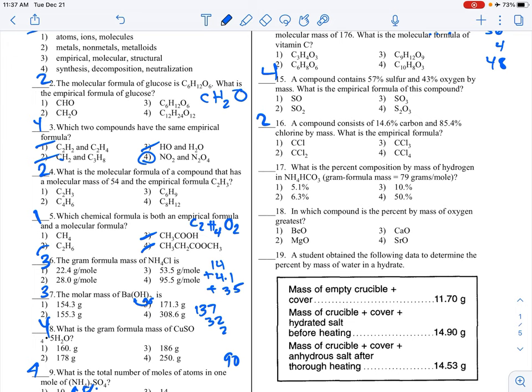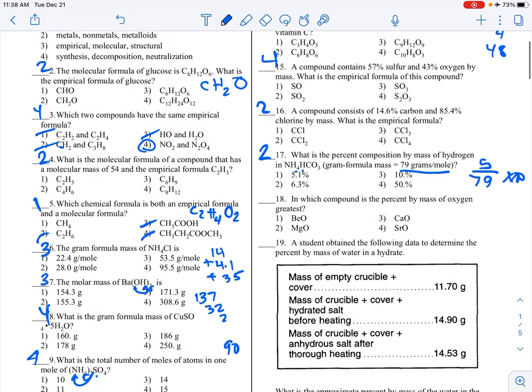What is the percent composition by mass of hydrogen in that formula? Thankfully, they gave us the total GFM. Now we only need to find the mass of hydrogen, that will be our numerator. I see 4 and then another one, so 5 hydrogens. 5 times 1 is 5 over 79 times 100. 5 divided by 79 times 100 is 6.3%.